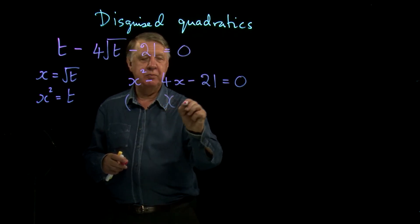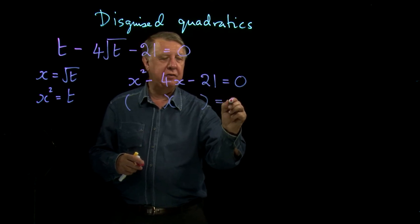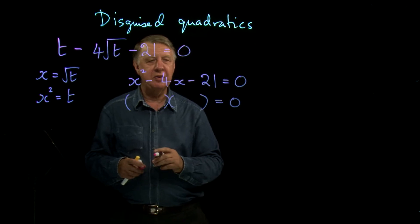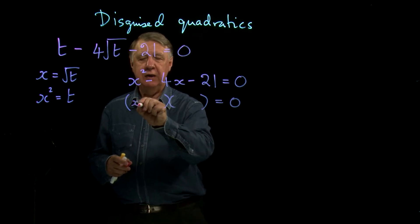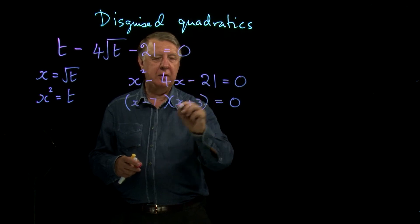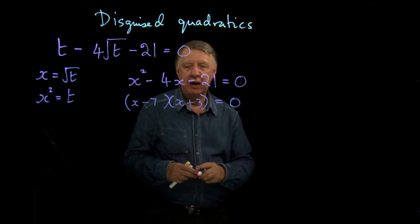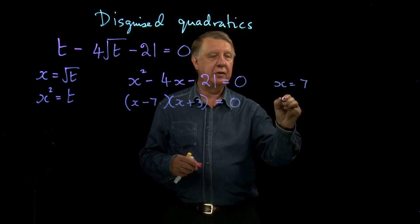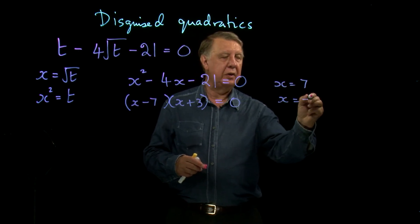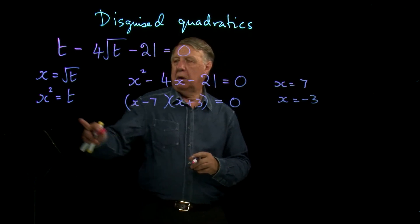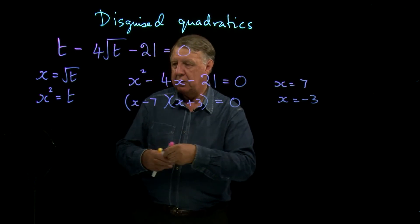Let's factorise this one. Usually, they'll give you ones that factorise. Otherwise, it just makes it all very complicated. x take 7, x add 3. So, the values of x, then, are 7 and negative 3. Now, if you look at this here.